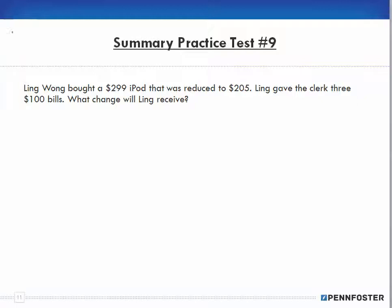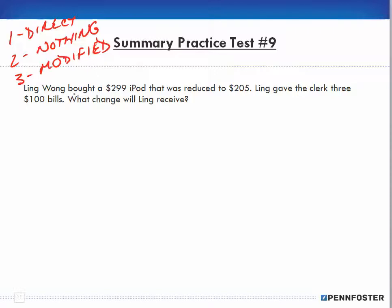When doing word problems, remember there are three categories of information: what's directly related to solving the problem, what has nothing to do with the problem, and what needs to be modified. This problem has all three. Ling bought a $299 iPod reduced to $205 — we want to know what change Ling receives. The $299 has nothing to do with the problem.